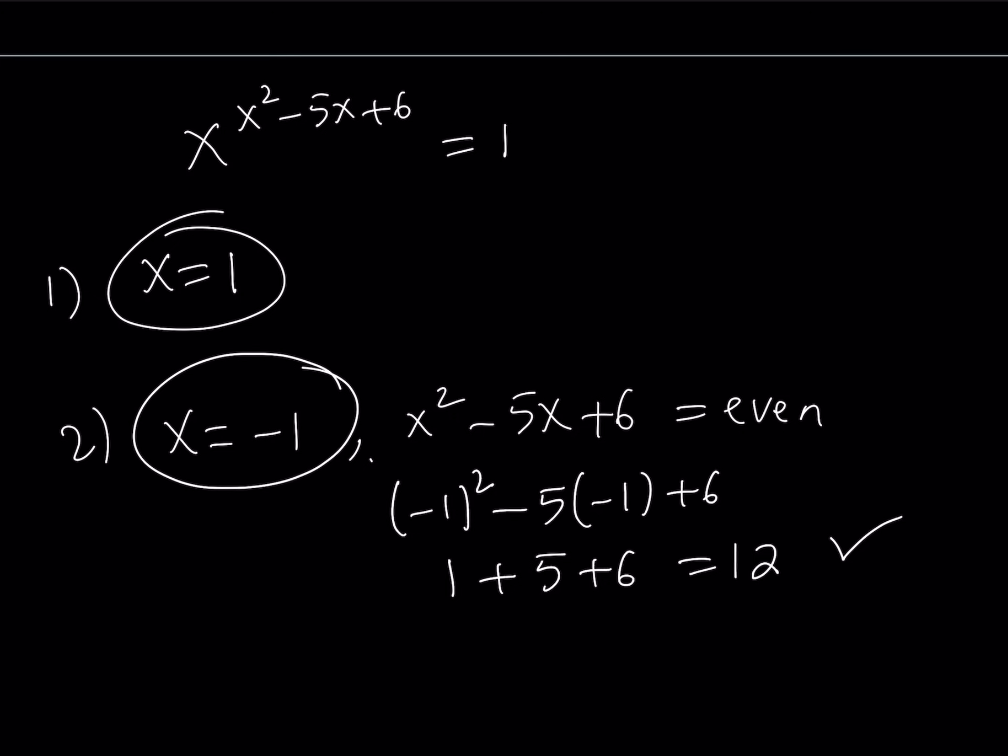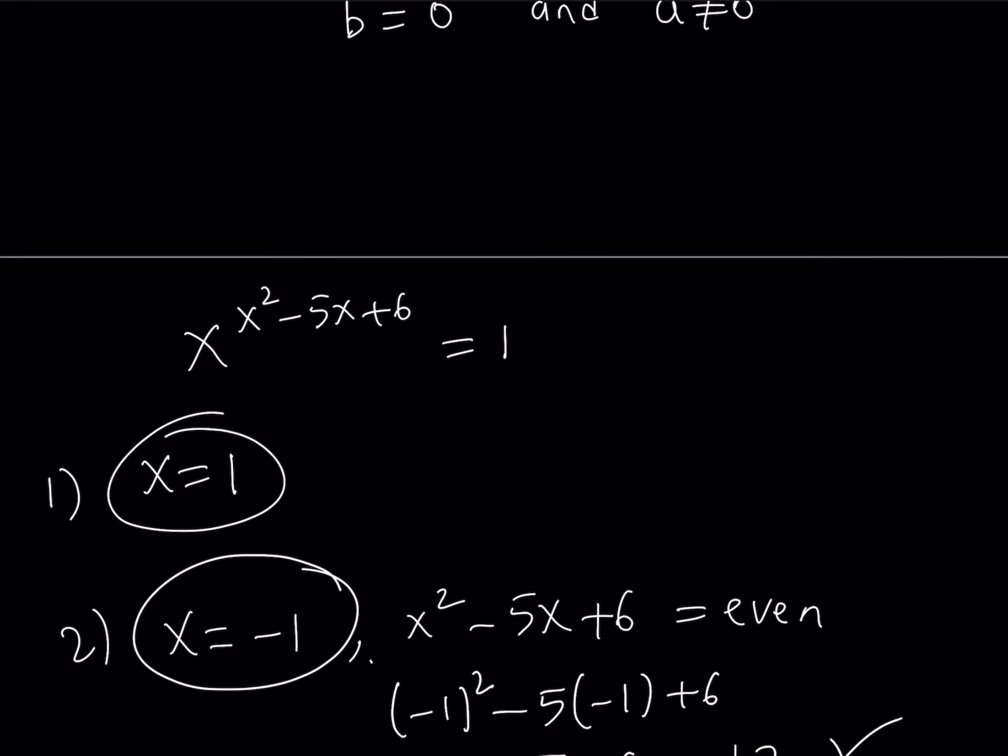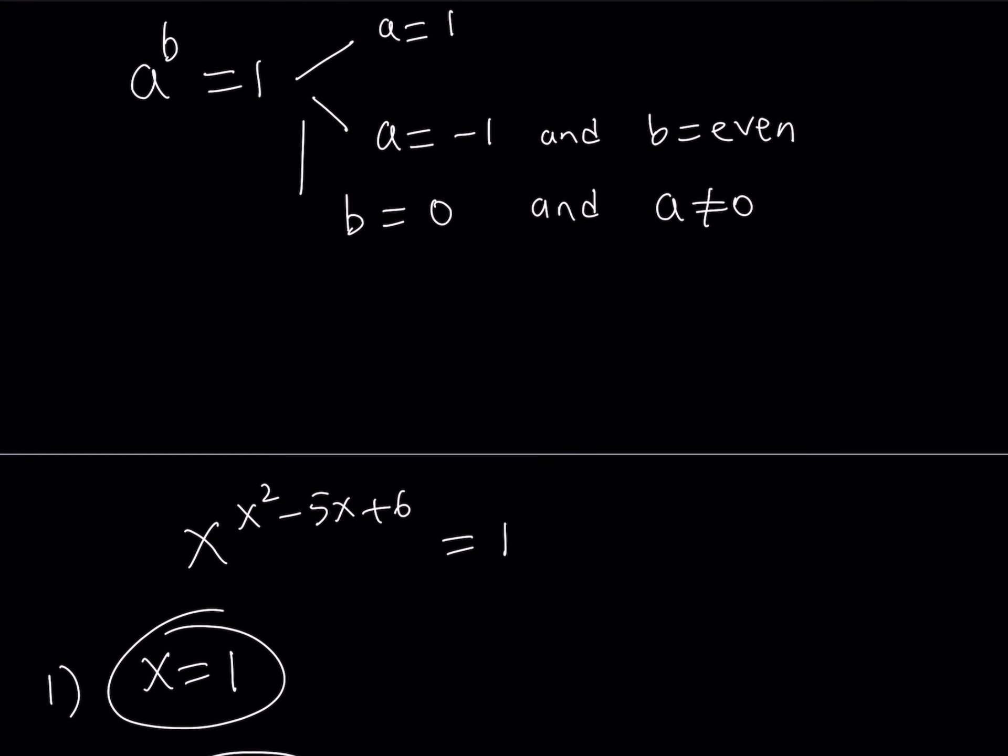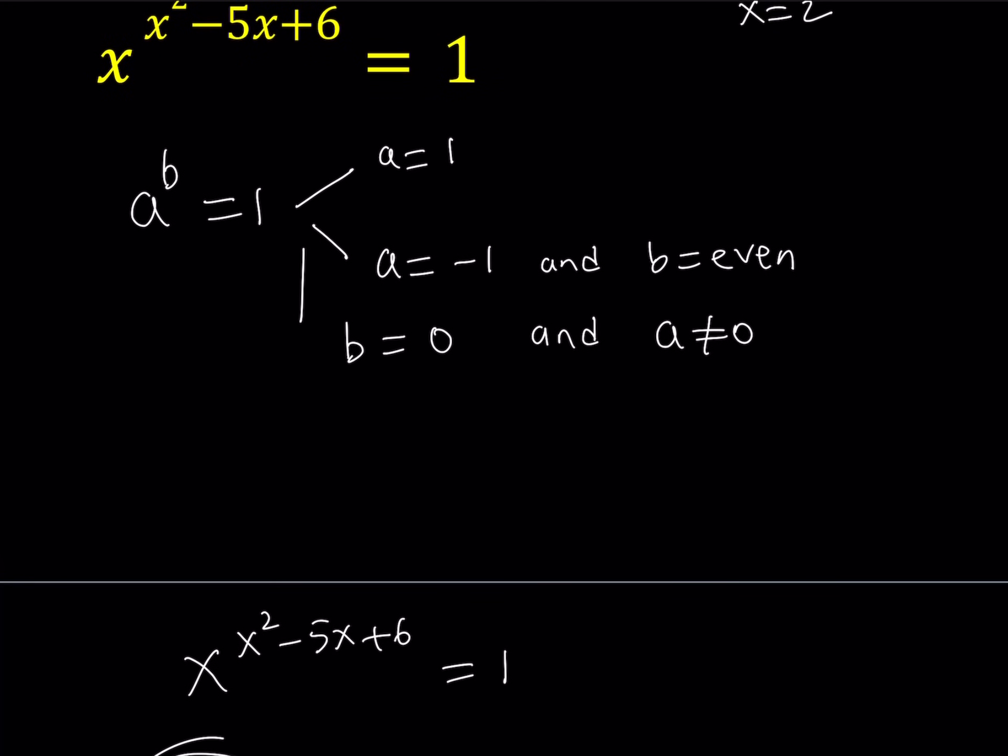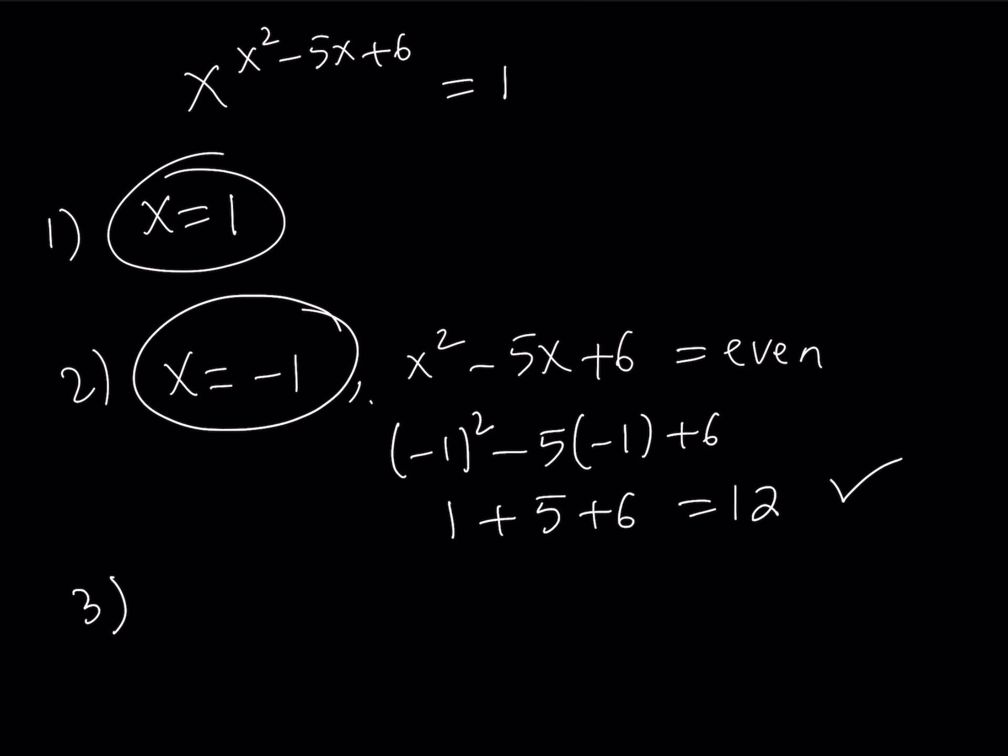So we've got two solutions so far. We're going to be looking at the third one. The third one involves the exponent being 0. So what does that give us? Let's see. So I want x squared minus 5x plus 6 to be 0 and I don't want x to be 0. Is that possible? Let's take a look.